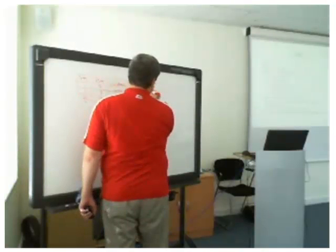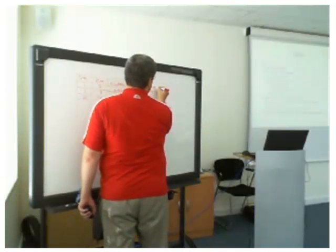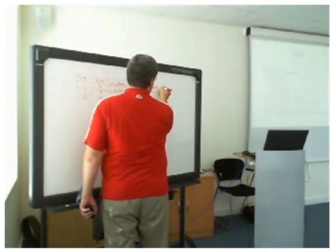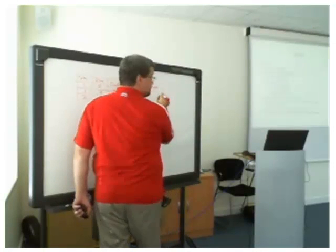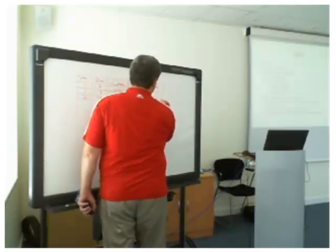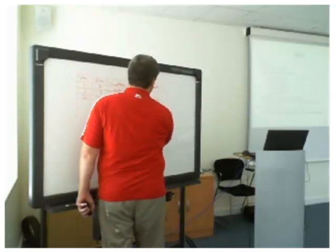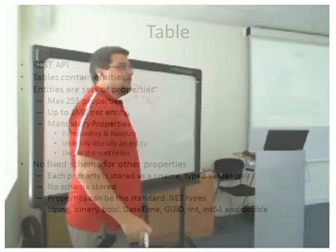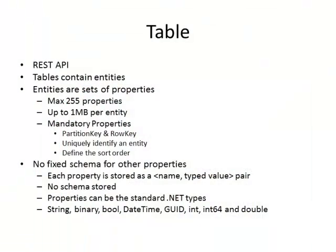And then you can have a favorite color, and you can spell it in US English. And that can be blue. The data can be completely disjoint in the tables, so it doesn't really behave like a table.